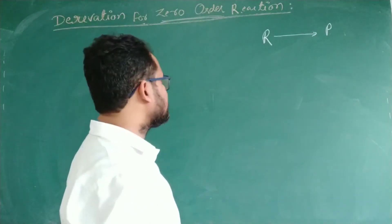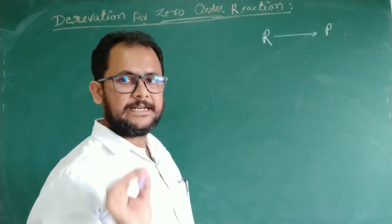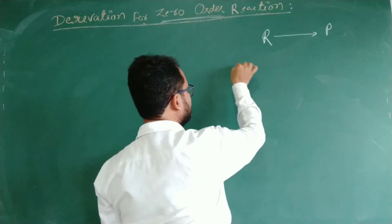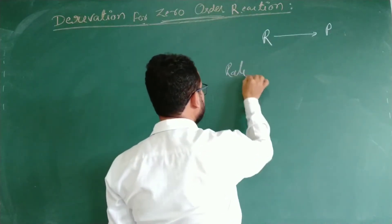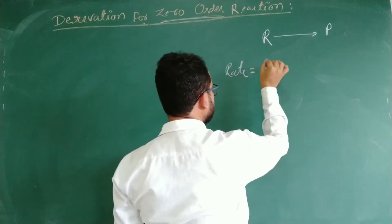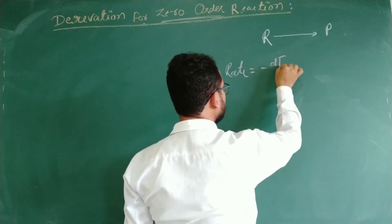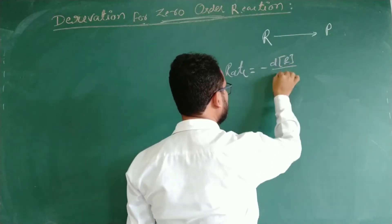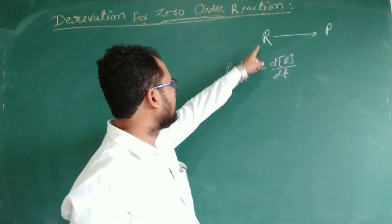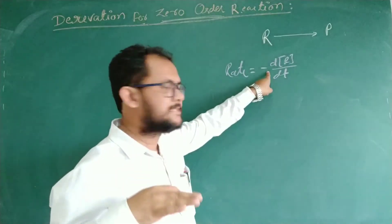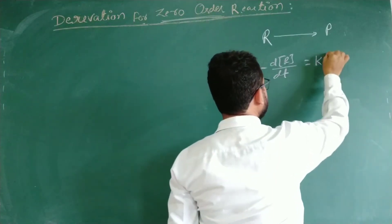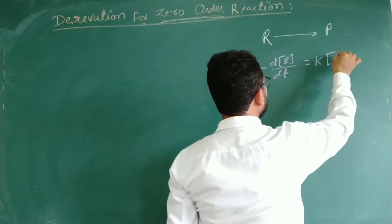If we write the instantaneous rate of reaction, the instantaneous rate is written as minus dR by dt. The minus sign is because the reactant concentration is decreasing. So the rate is equal to the rate constant k.